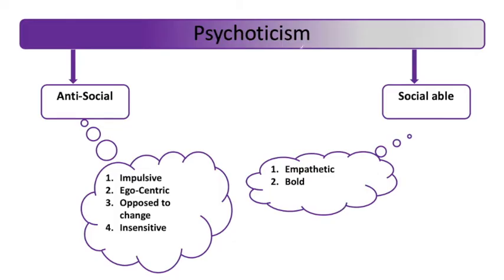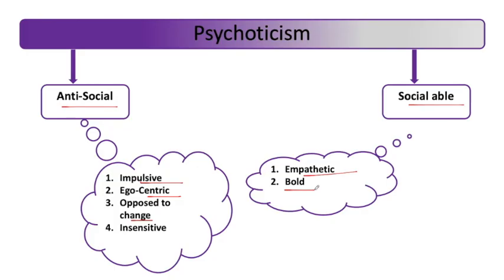Next dimension unhone liya psychoticism. Psychotic person kaun hota hai — jo antisocial hota hai, jo reserved rehta hai, jo isolated rehta hai, use psychotic kehte hain. Isme do personality types unhone define kiye — antisocial and social level, yaani psychotic versus social level. Agar person psychoticism mein high score karta hai, toh woh antisocial hoga — impulsive hoga, egocentric, matlab uski duniya sirf usi ke aaspaas revolve karegi, opposed to change yaani woh changes accept nahi kar paega, aur insensitive hoga. Aur agar social level hota hai, toh woh empathetic hota hai aur bold hota hai. Toh yeh tha unka psychoticism dimension.